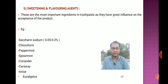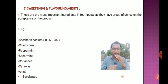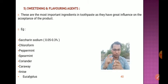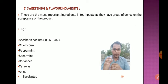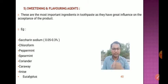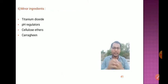Sweetening and flavoring agents are among the most important ingredients in toothpaste as they have great influence on the acceptance of the product. Sodium saccharine is a key sweetener — it is almost 500 times sweeter than sucrose but is used in very trace amounts. Other examples include chloroform, peppermint oil, spearmint, coriander, caraway, anise, and eucalyptus — all used as sweeteners and flavors from herbal as well as synthetic origin.